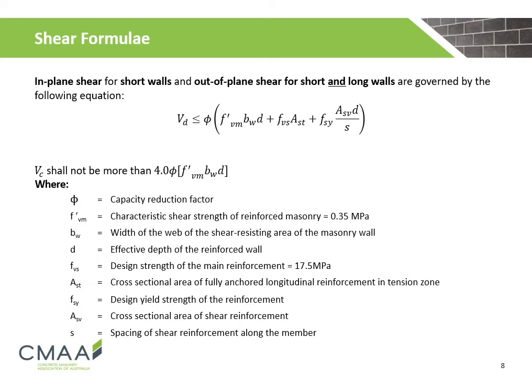In-plane shear for short walls and out-of-plane shear for short and long walls are governed by the following equation, where phi is the capacity reduction factor; F'vm is the characteristic shear strength of the reinforced masonry; Bw is the width of the web of the shear-resisting area of the masonry wall; D is the effective depth of the reinforced masonry wall; Fes is the design strength of the main reinforcement; Ast is the cross-sectional area of the reinforcement; Fsy is the design yield strength of the reinforcement; Asv is the cross-sectional area of the shear reinforcement; and S is the spacing of the shear reinforcement along the member.